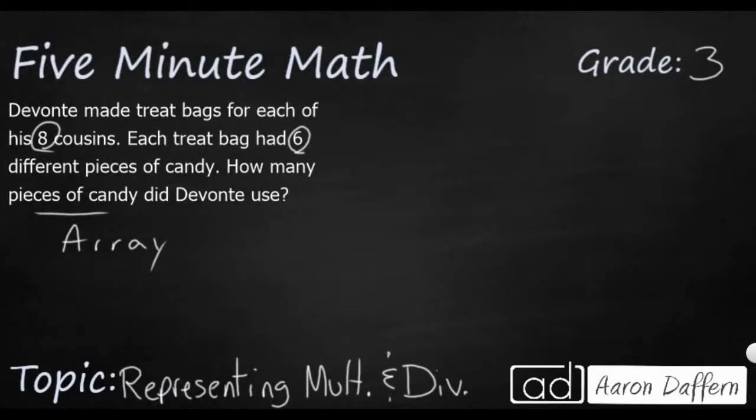How would we draw this as an array? Well, we have six pieces of candy, so I'm just going to draw six circles. That's going to represent one of my cousins. My next set of six is my second cousin. My third set of six is my fourth cousin. So far, I've got four cousins down because I've got one, two, three, four. Each row is a cousin and each column is a piece of candy. Remember how each cousin gets six pieces of candy.